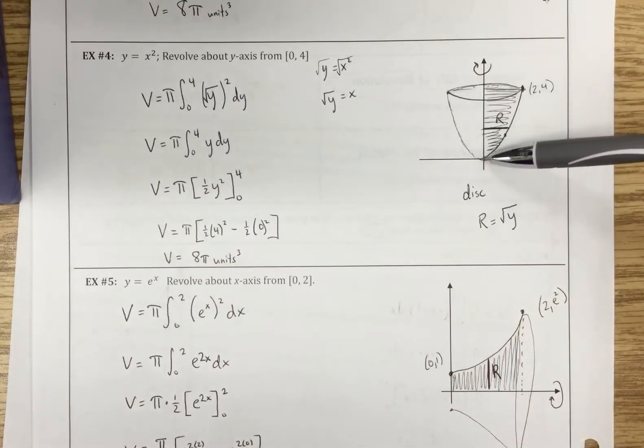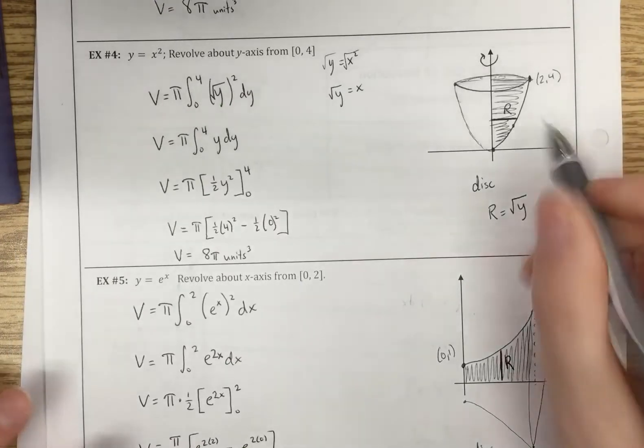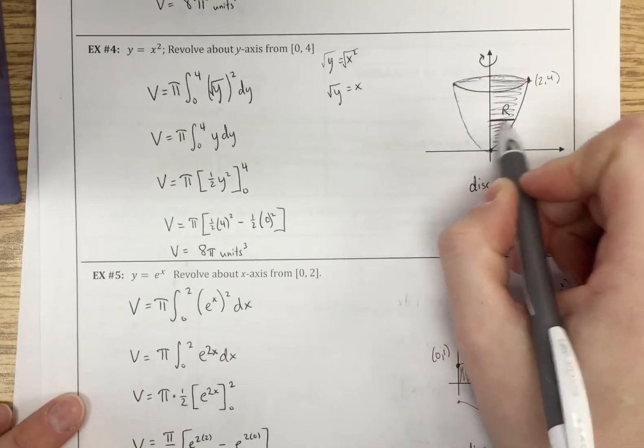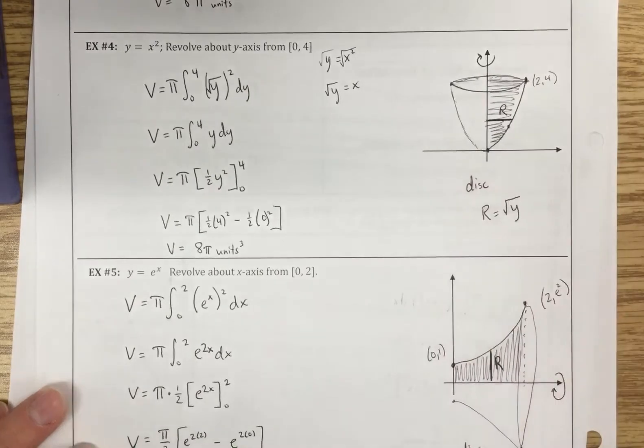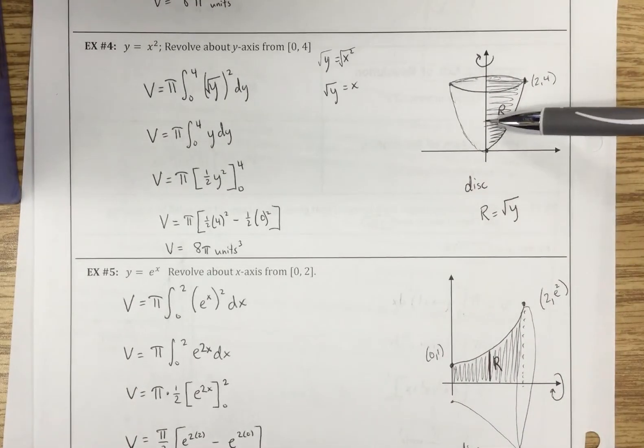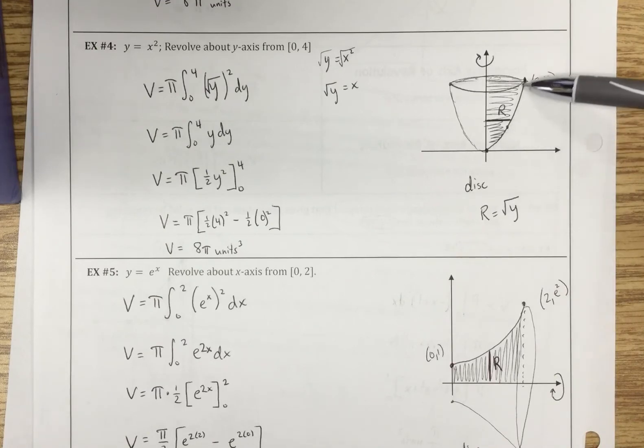So we have this parabola coming up. My radius is now this distance here. And so my radius is going to be changing as we go up and down the curve.